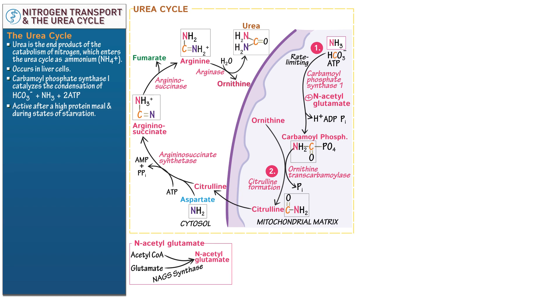Urea is simply two highlighted amine groups joined by a carbonyl carbon originally from bicarbonate. Urea can safely diffuse into circulation and travel to the kidneys where it's excreted as urine.